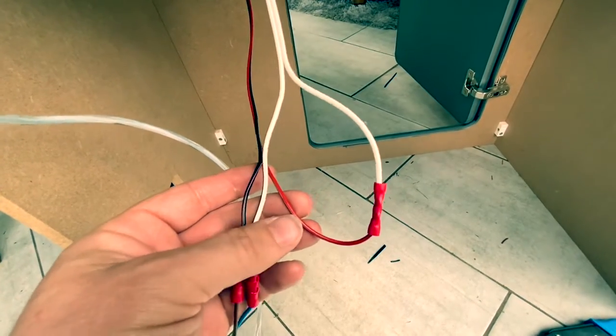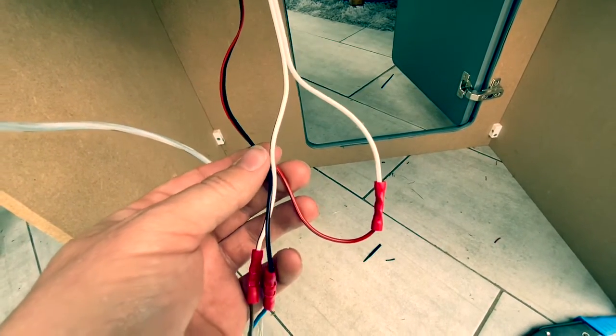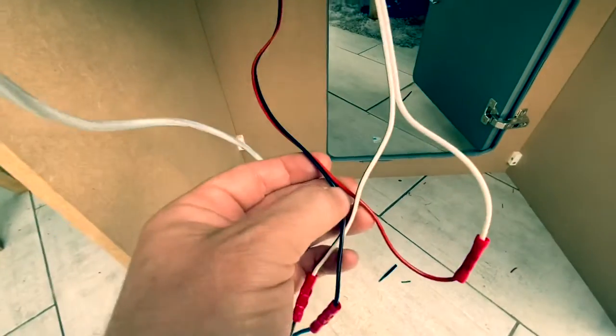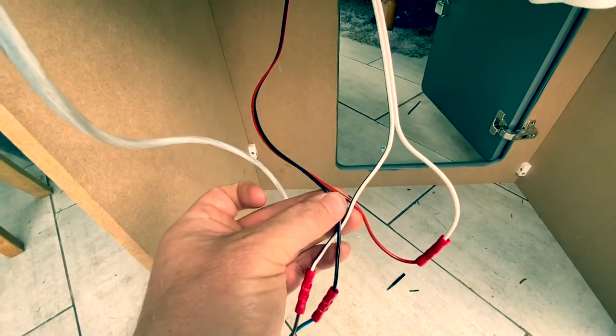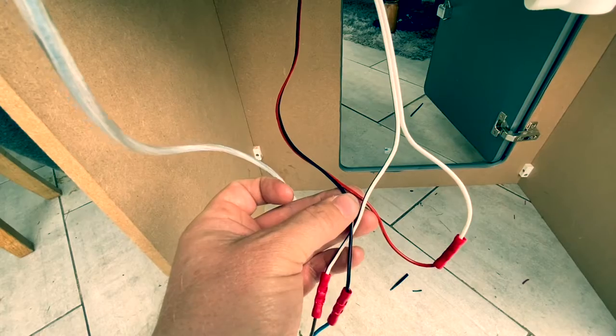Positive of the tap then to the positive connection where our leisure battery will be as well. So that's the connections. What we're going to do now is a quick bench test.